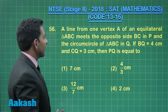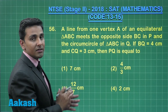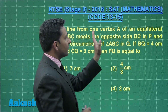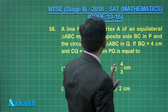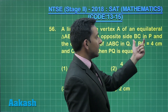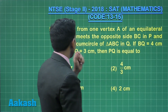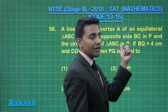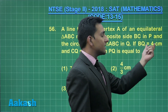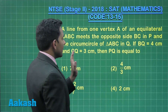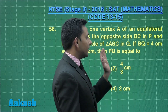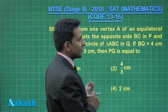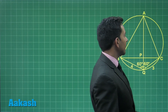Let us take question number 56. This question belongs to the topic of circles. The question states: a line from vertex A of an equilateral triangle ABC meets the opposite side BC at P and the circumcircle of triangle ABC at Q. If BQ is equal to 4 centimeters and CQ is equal to 3 centimeters, we have to determine the length of line segment PQ. Let us draw the diagram representing the given information.